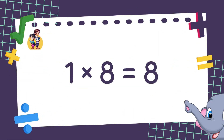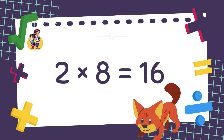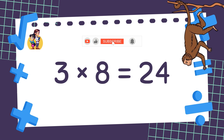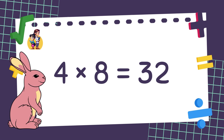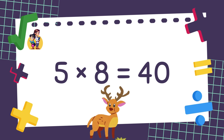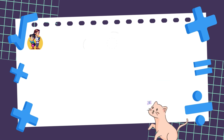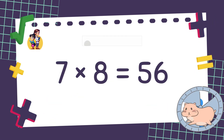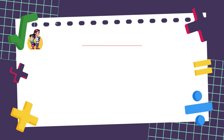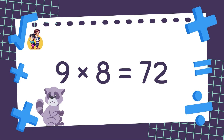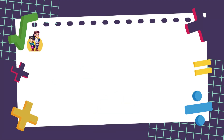1 x 8 is equal to 8. 2 x 8 is equal to 16. 3 x 8 is equal to 24. 4 x 8 is equal to 32. 5 x 8 is equal to 40. 6 x 8 is equal to 48. 7 x 8 is equal to 56. 8 x 8 is equal to 64. 9 x 8 is equal to 72. 10 x 8 is equal to 80. Well done!